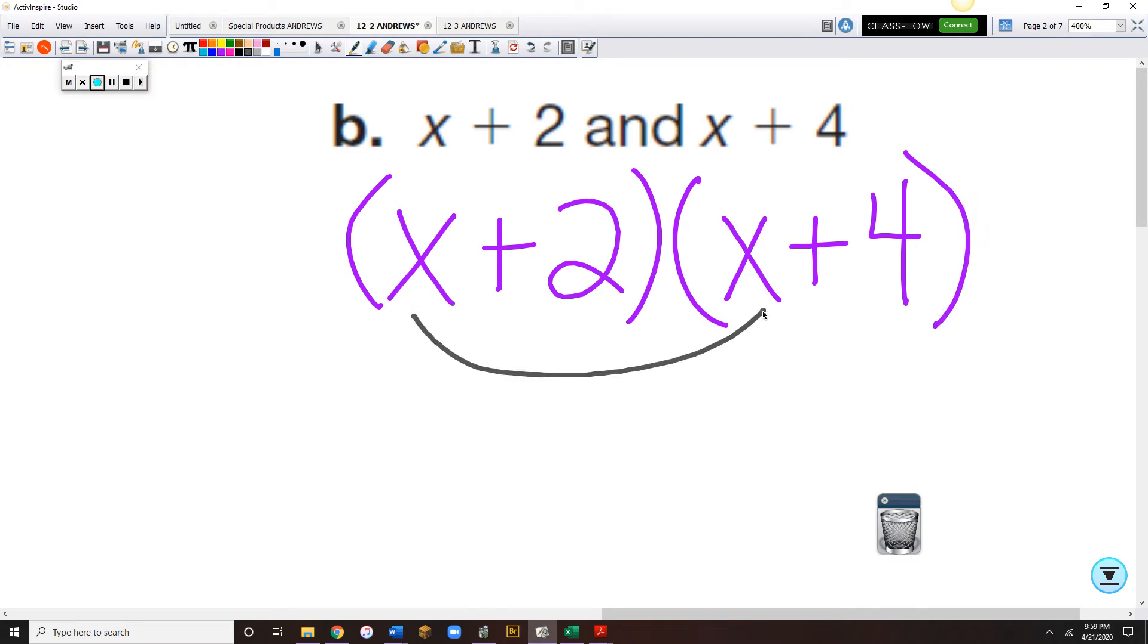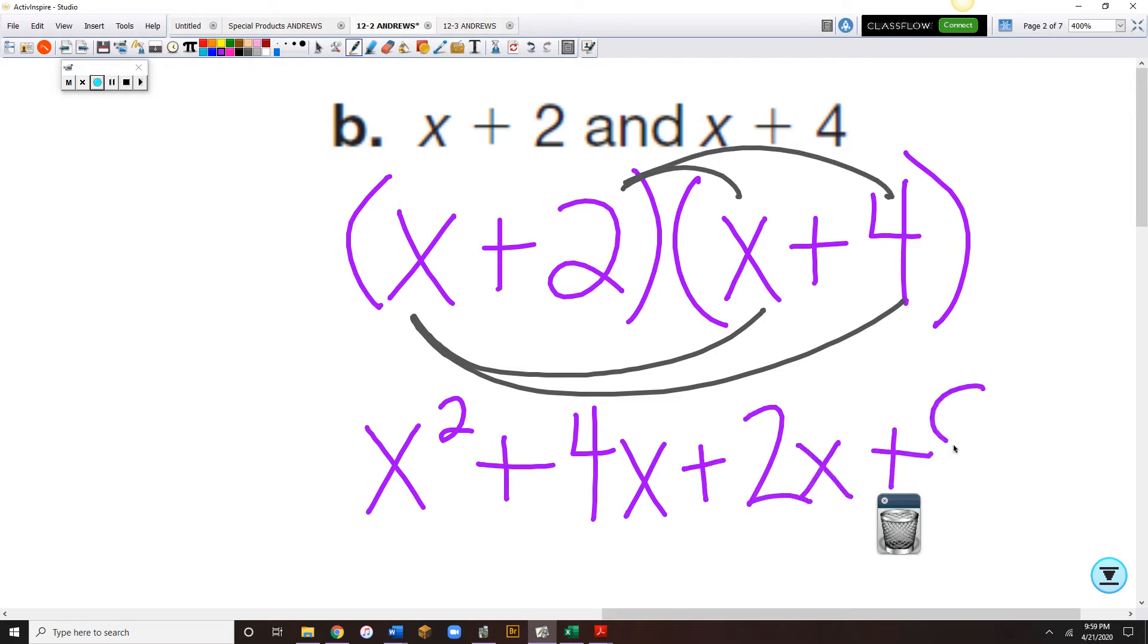Starting with the x. x times x. And x times 4. x times x is x squared plus 4x. And we'll go to the 2.